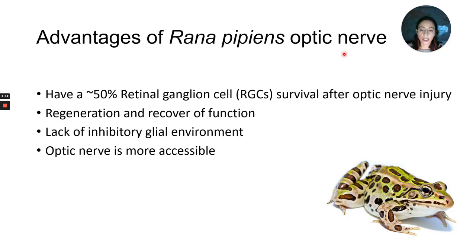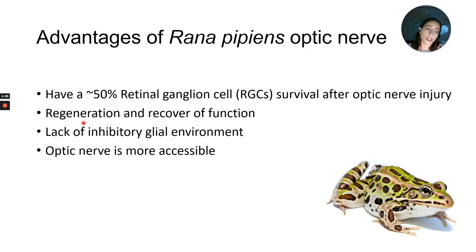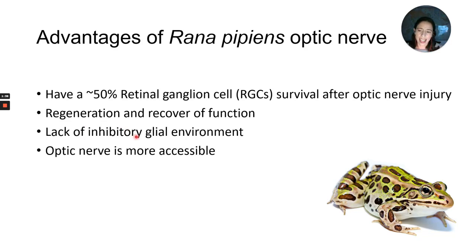The retinal ganglion cells of Rana pipiens have 50% survival once you have an axotomy or optic nerve injury. At one week, you just start to see axonal regrowth. In six weeks, you see them reaching the target in the tectum, and in three months or a little more, you see recovery of function and gain of vision. There is a lack of inhibitory environment and good accessibility of the nerve in this model.